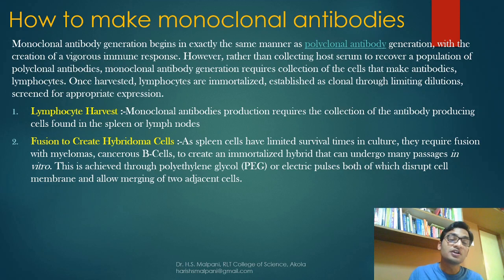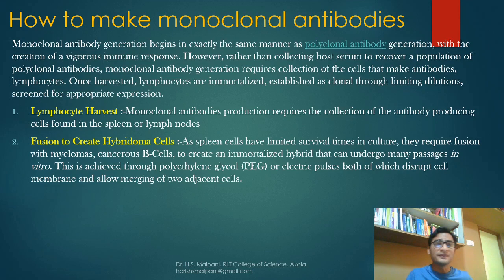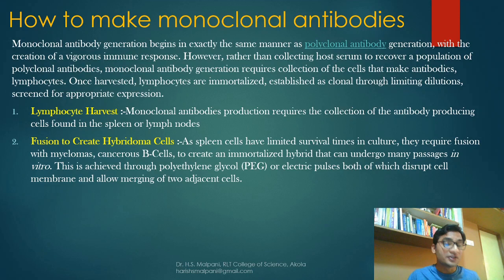Step two is fusion to create hybridoma cells. Since spleen cells have limited survival time in culture and are short-lived, they need to be fused with myeloma cells to create an immortalized hybrid that can undergo many passages in vitro. This is achieved through PEG — polyethylene glycol — or by electric impulses, which disturb the cell membrane and allow two cell membranes to join together.